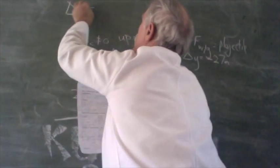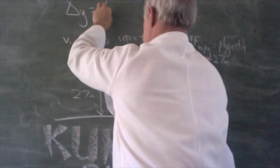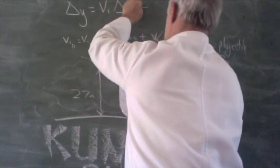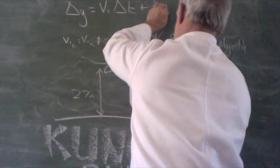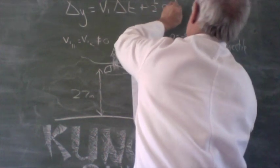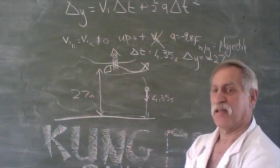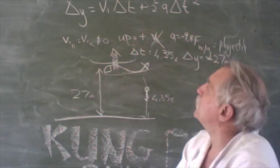Delta Y equals V initial delta T plus one half A delta T squared. That the formula. We got all the variables for.